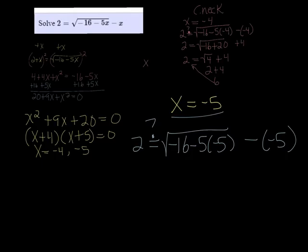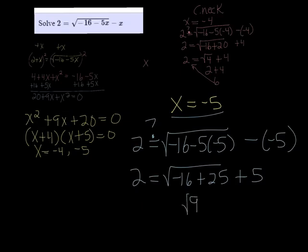Well, this is going to be the square root of negative 16 minus 5 times negative 5 would be negative 16 plus 25, and then subtracting a negative makes it a plus 5. Negative 16 plus 25 is 9, so we have the square root of 9 plus 5. That's equal to 3 plus 5, which is 8. And again, 8 does not equal 2.